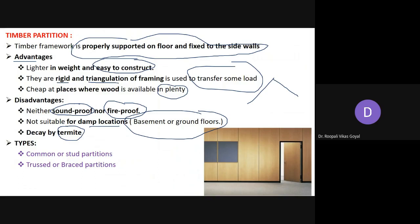There are two types of timber partitions which are widely used: first is the common or stud partition, and the second is the truss or braced partition. We will now see both in detail. This type of partition is also widely used in many buildings.